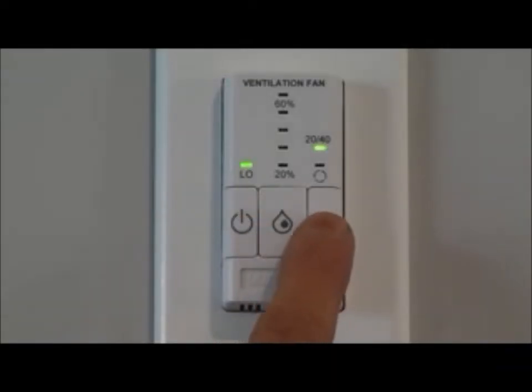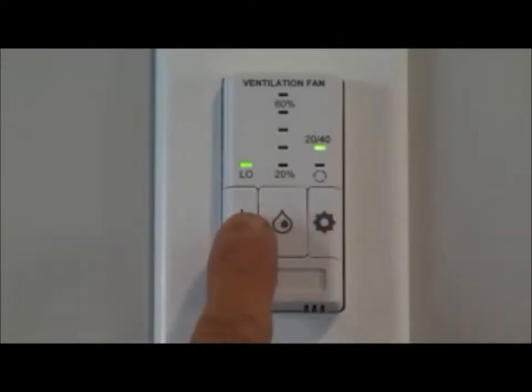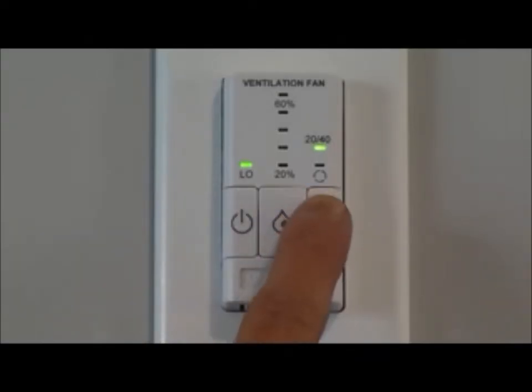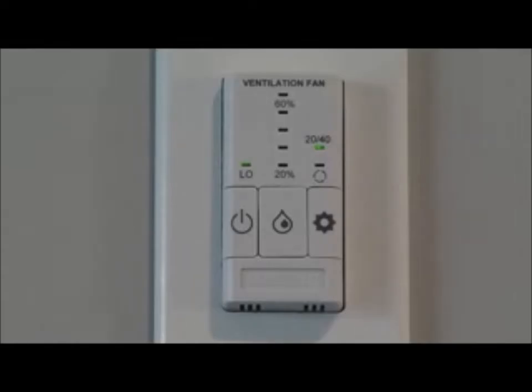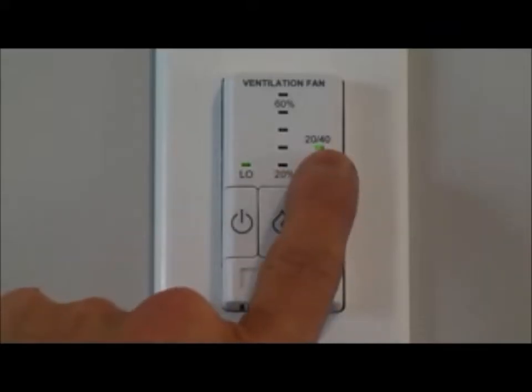You also have the option of what we call the intermittent low speed 2040. This is what we would consider your day to day living environment. As a ventilation system, do you need the HRV to pump fresh air 24 hours a day, 7 days a week into the home? No. An adequate amount of ventilation would be what we would consider a low speed 2040.